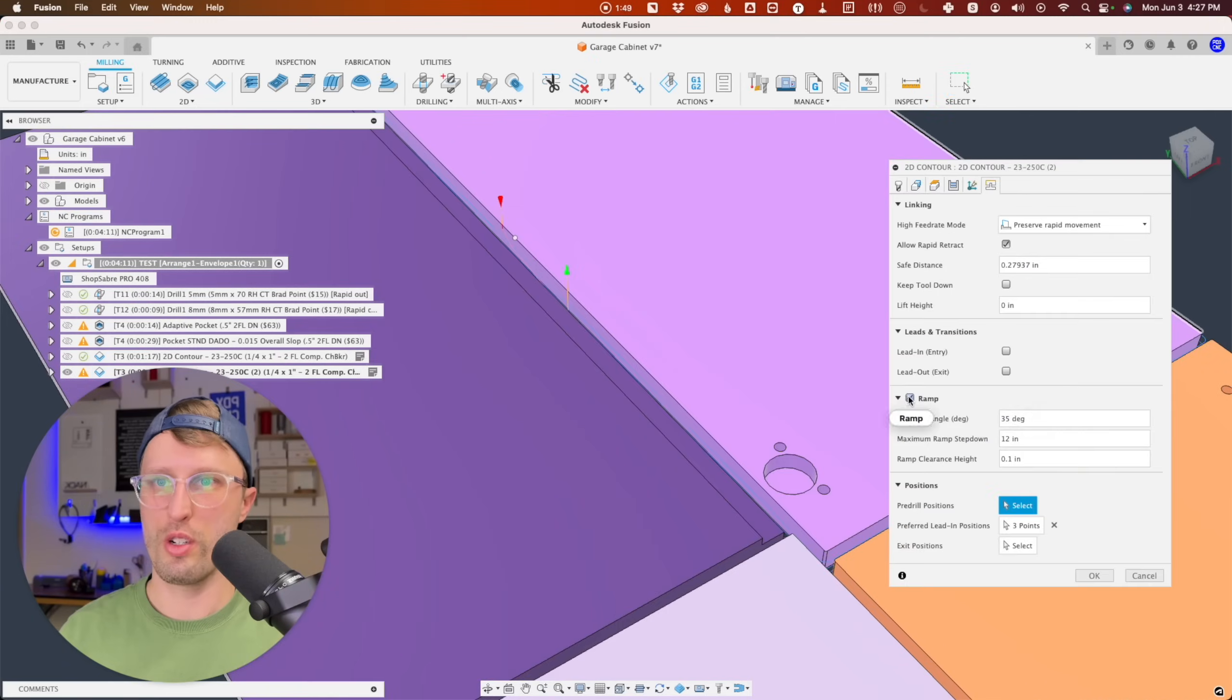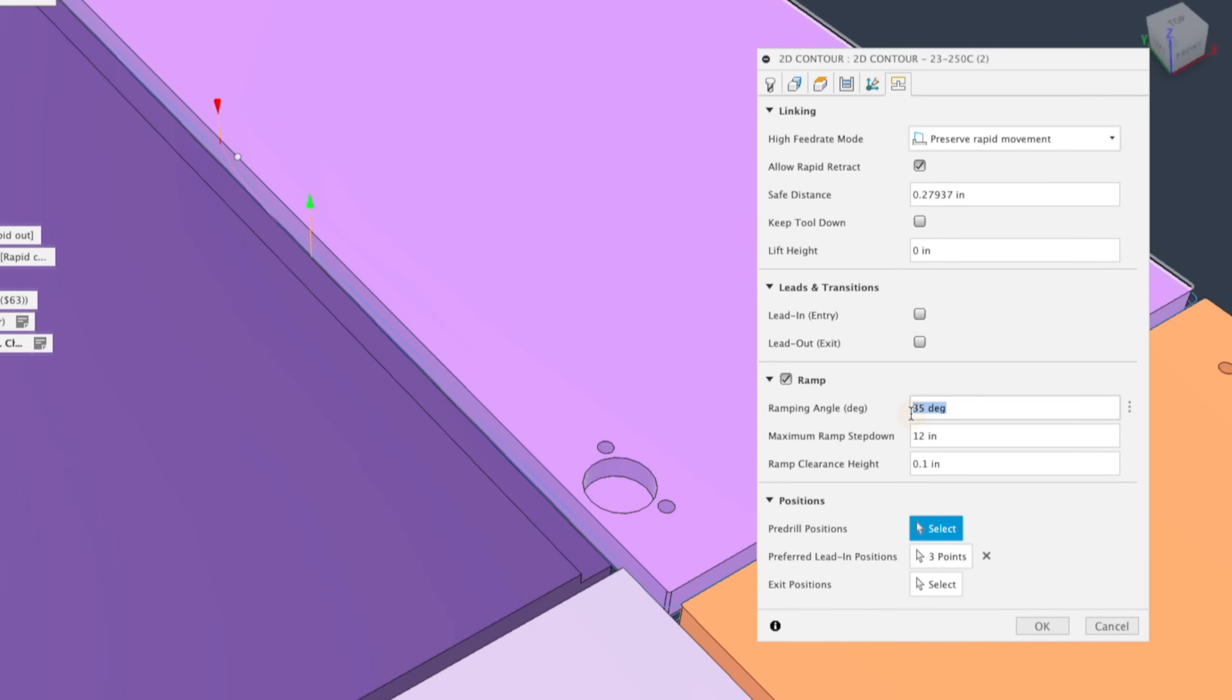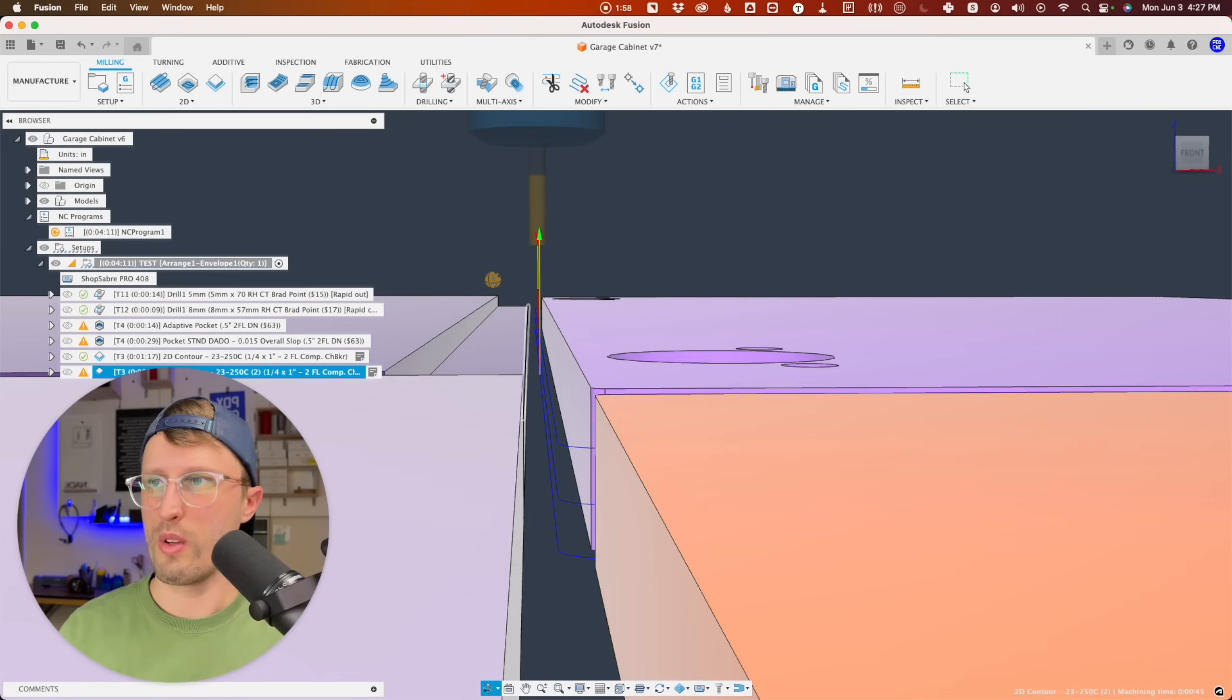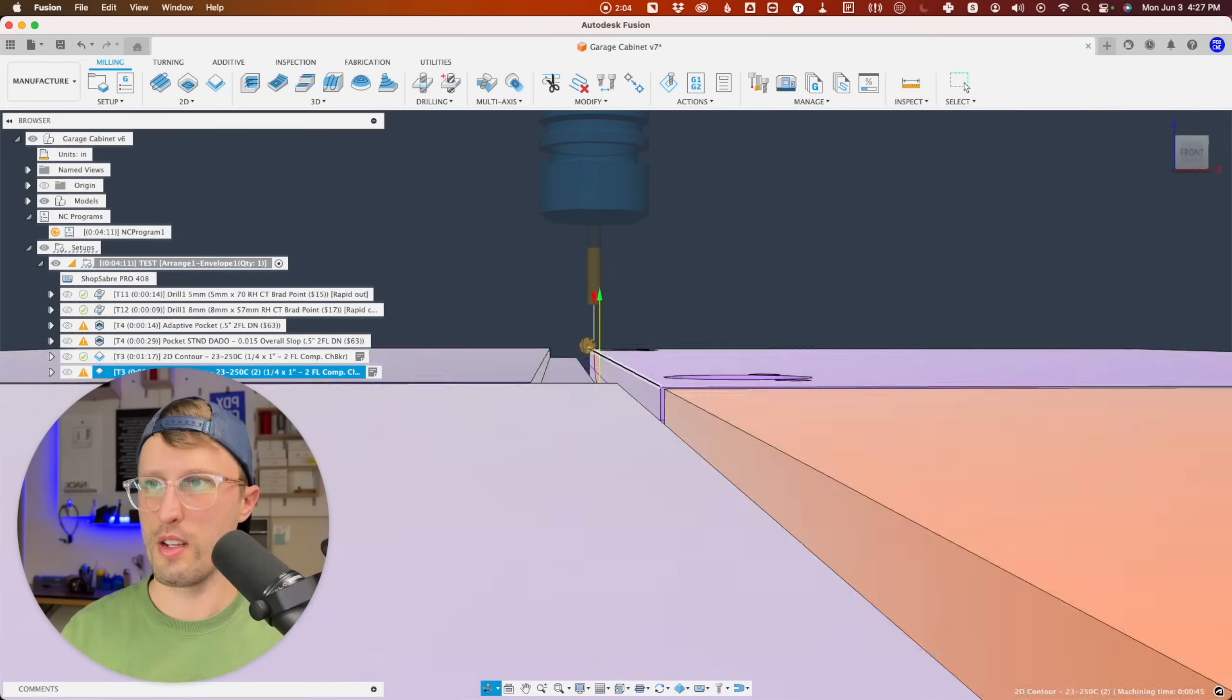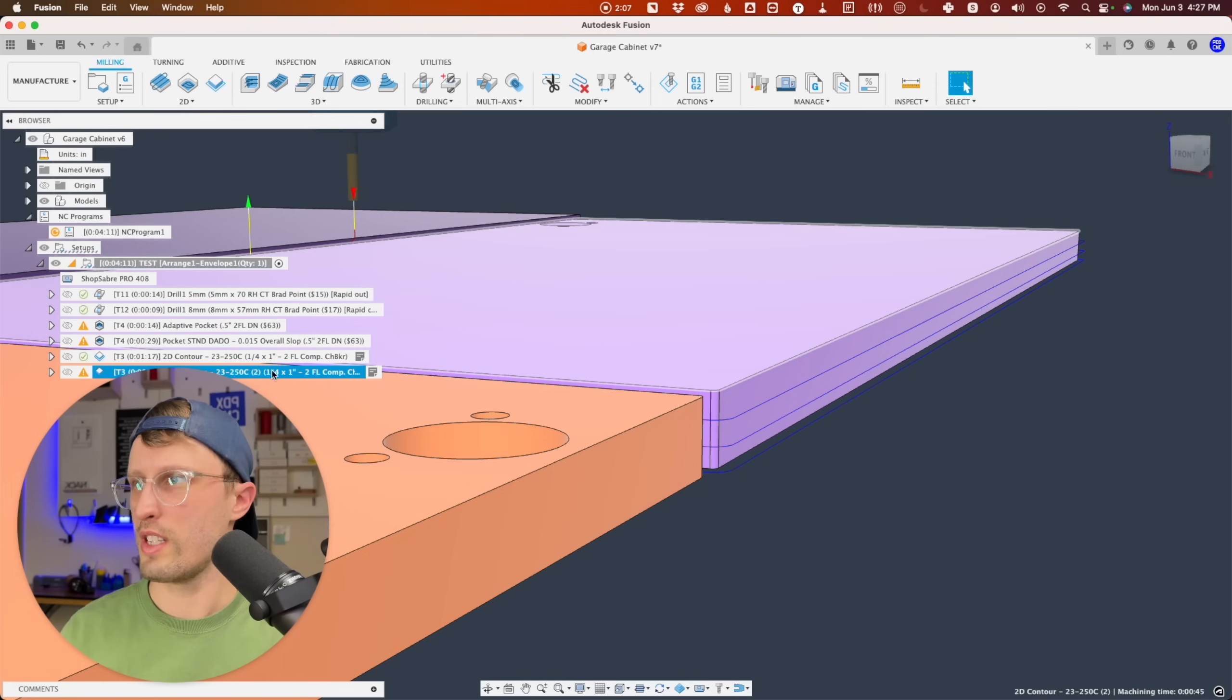Oh, another thing, make sure and do a ramp. That's also really useful in plywoods. Don't plunge straight in. We're going down maximum depth of cut, but we're not finishing it. So if I simulate this, we're going through that first pass, second pass.